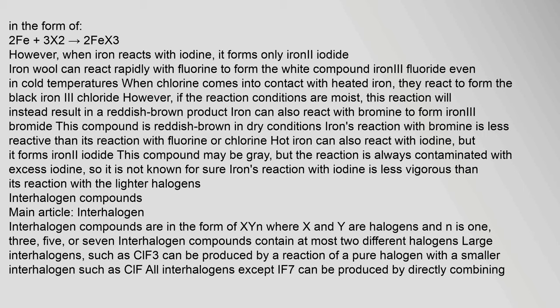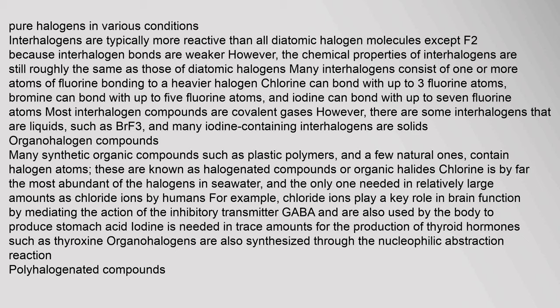Interhalogen compounds: Interhalogen compounds are in the form of XYn, where X and Y are halogens and n is 1, 3, 5, or 7. Interhalogen compounds contain at most two different halogens. Large interhalogens such as chlorine trifluoride can be produced by a reaction of a pure halogen with a smaller interhalogen such as ClF. All interhalogens except IF7 can be produced by directly combining pure halogens in various conditions. Interhalogens are typically more reactive than all diatomic halogen molecules except F2, because interhalogen bonds are weaker. However, the chemical properties of interhalogens are still roughly the same as those of diatomic halogens.